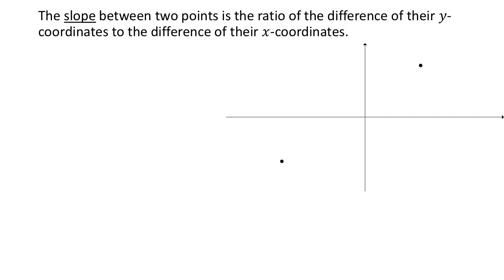Let's start with a definition. The slope between two points is the ratio of the difference of their y-coordinates to the difference of their x-coordinates. That sounds pretty complicated, so let's unpack it a little bit. First of all, it says that the slope is a ratio. Mathematically, a ratio is the same as a fraction, so let's put our fraction bar.